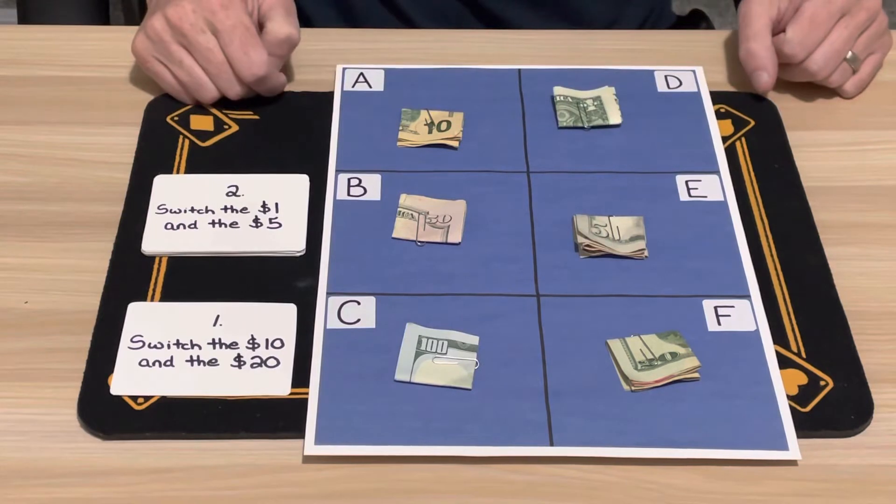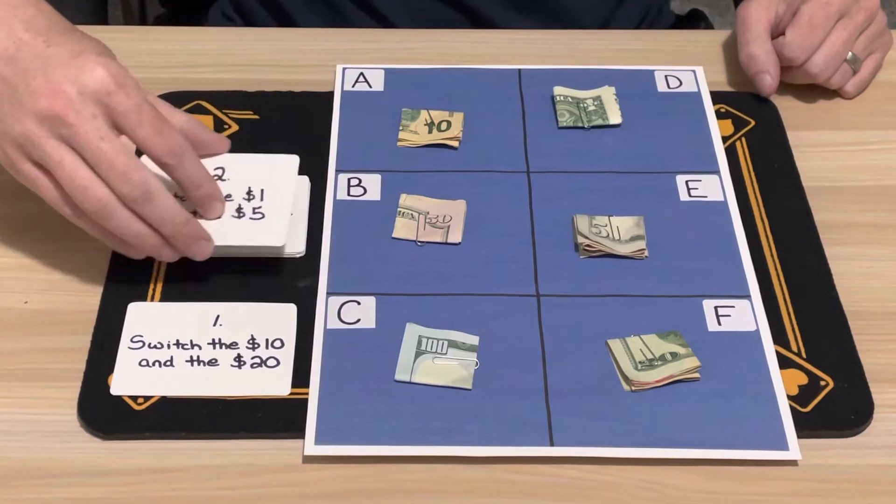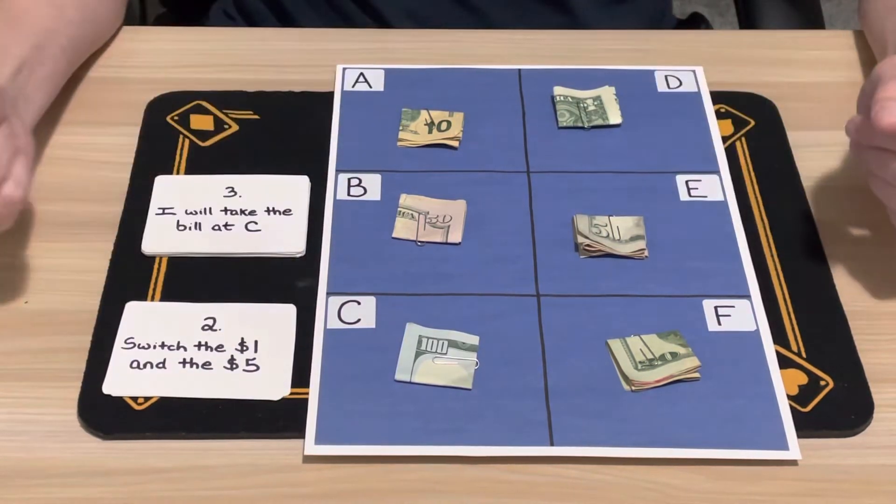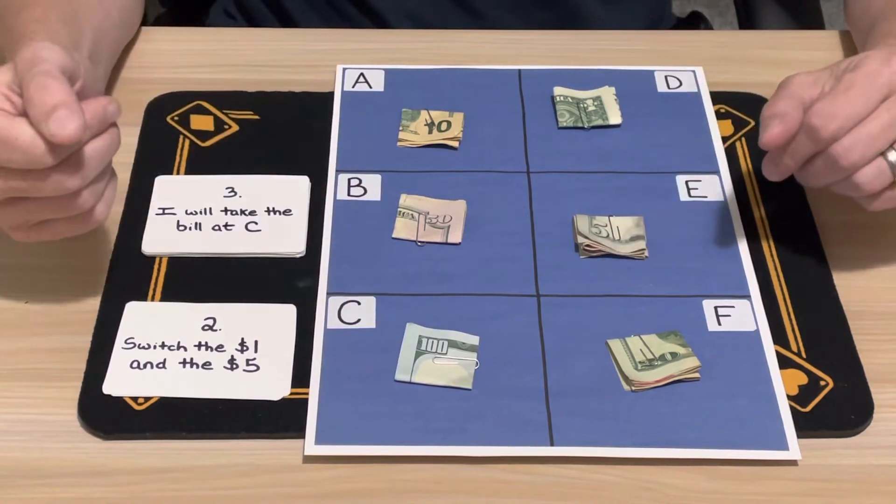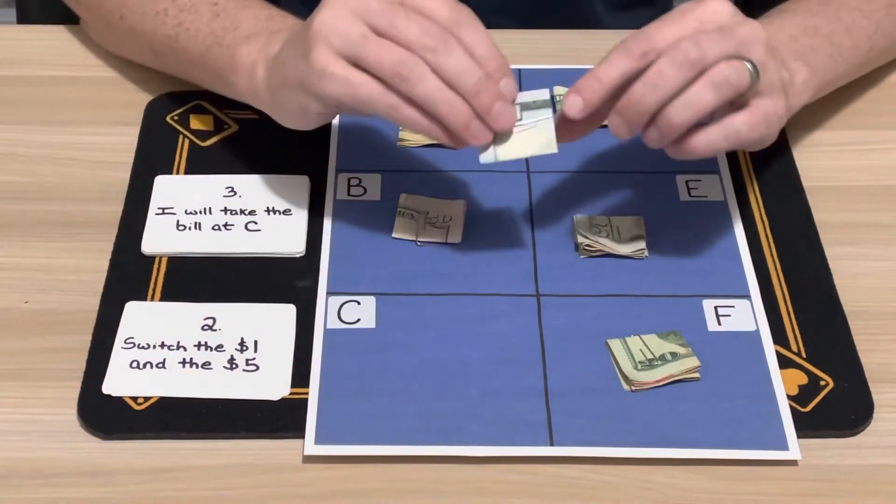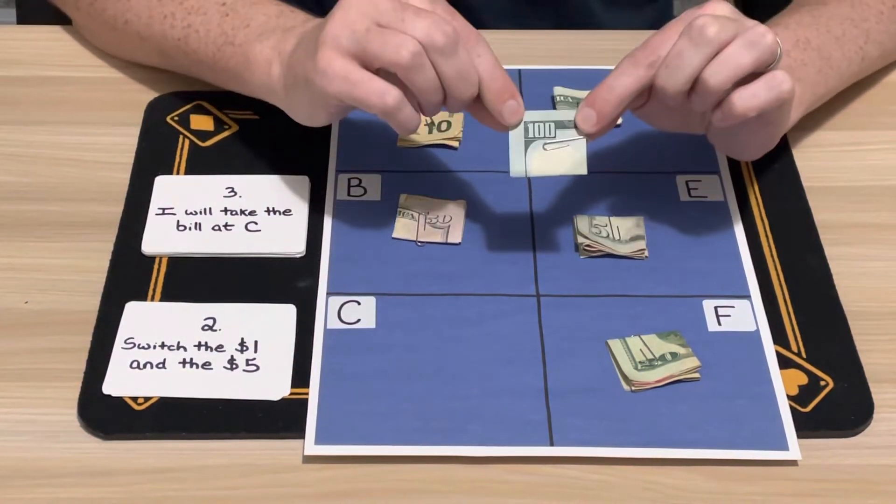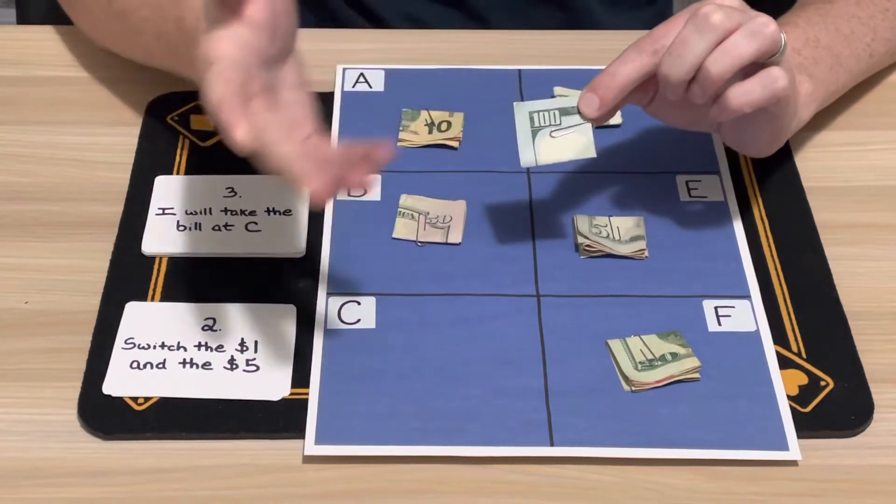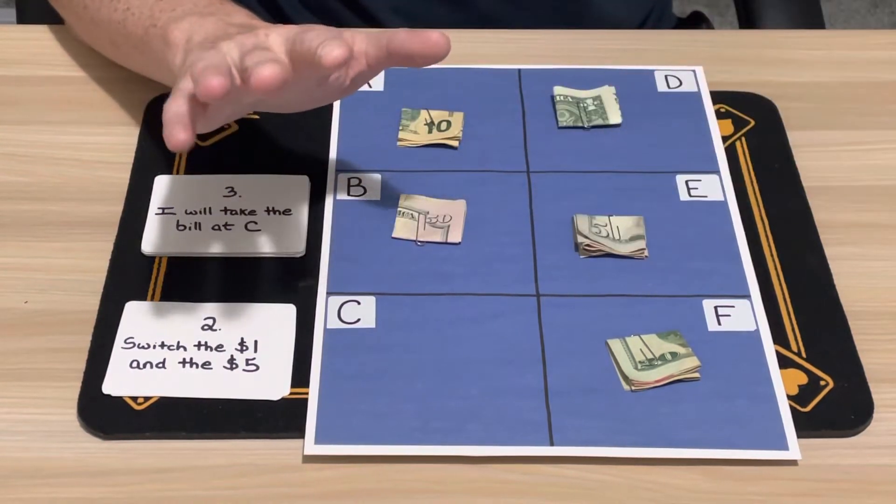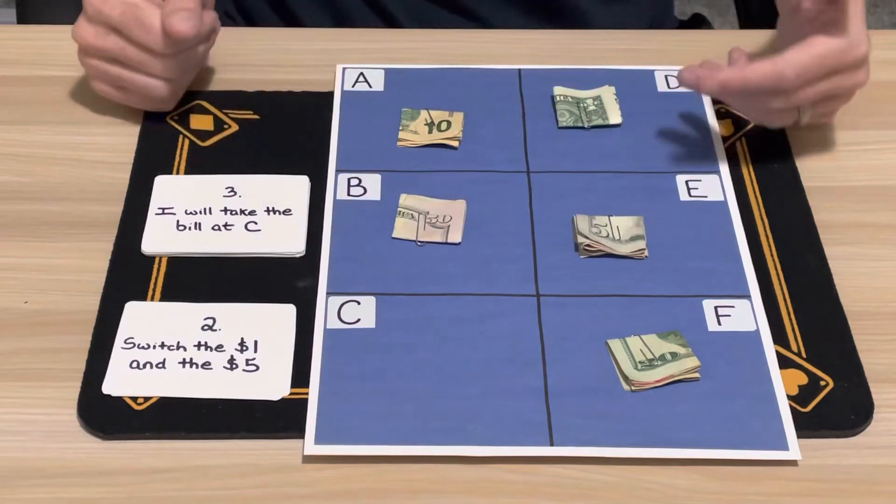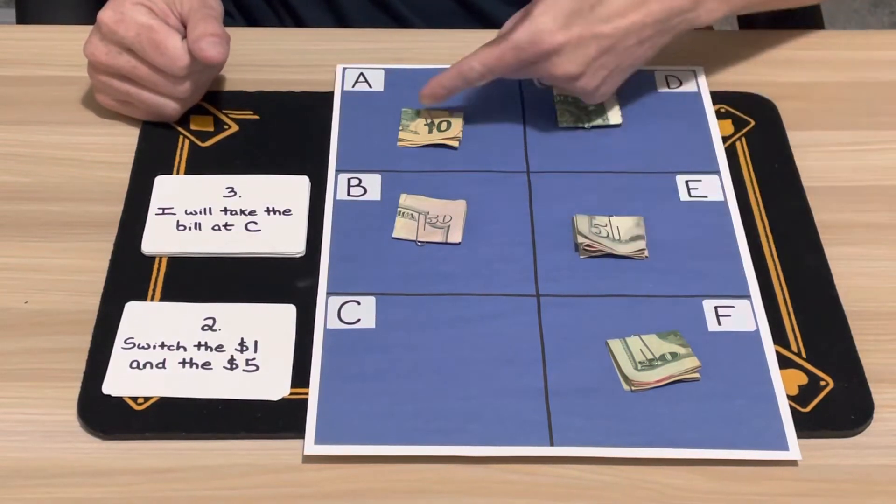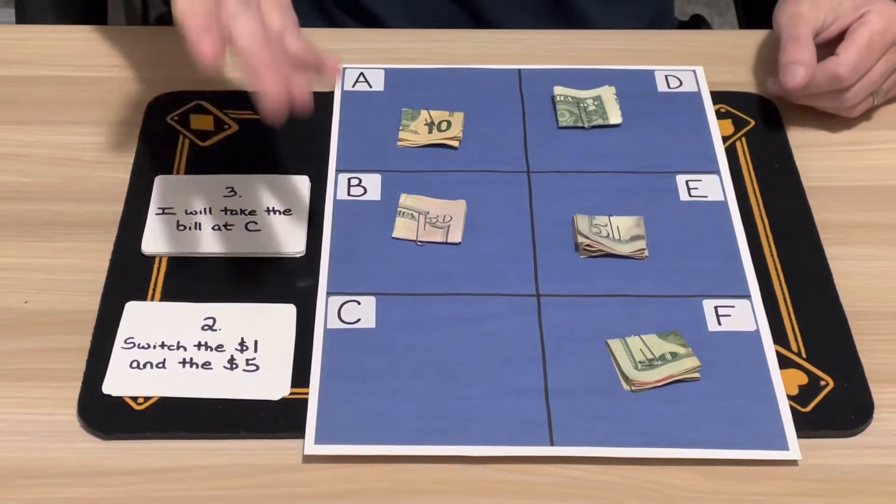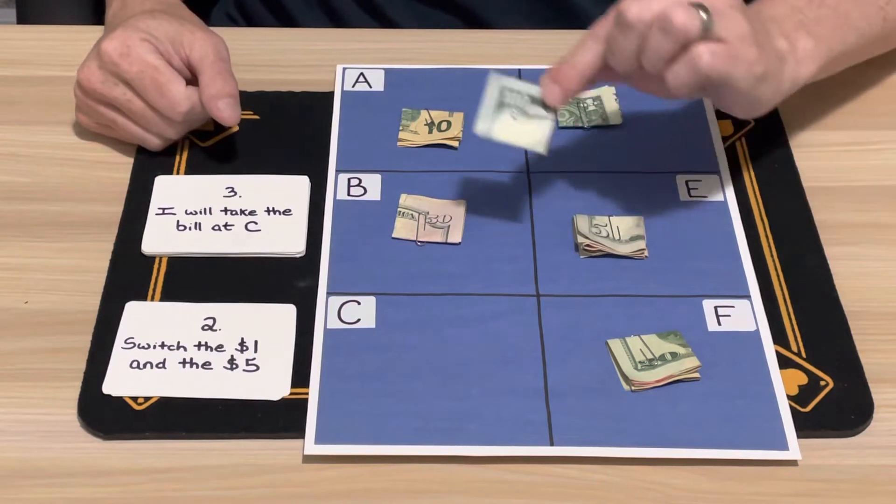Step three: I will take the bill at C. So right off the bat, that $100 goes off the table. I'm very sorry, but you know what, there's still lots of other money that you can win. We've got $50, $20, $10, and $5—lots of money that you can still win even though the $100 is now off the table.